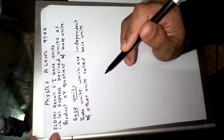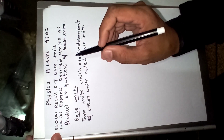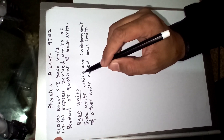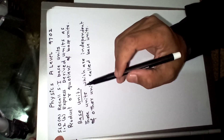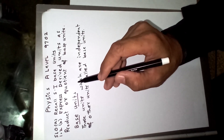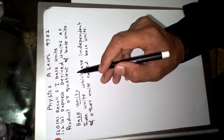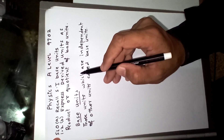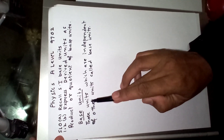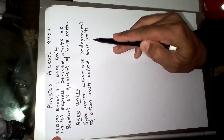Let me discuss what are base units and what are physical quantities. The quantities in physics which are measured are called physical quantities. Physical quantities may be classified into base quantities and derived quantities. Those quantities which are not dependent on other quantities are called base quantities, and their corresponding units are called base units.